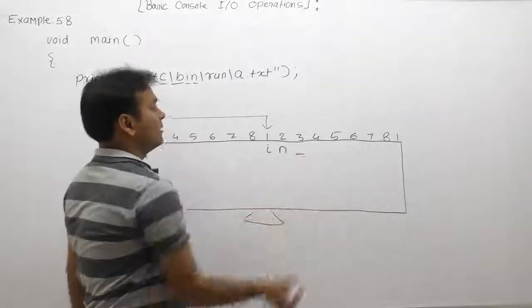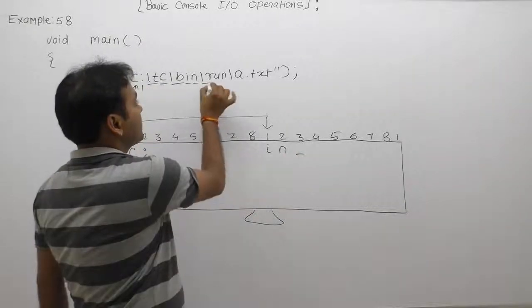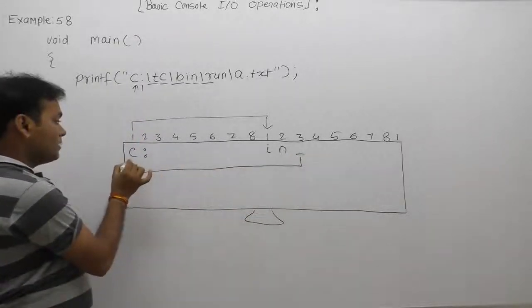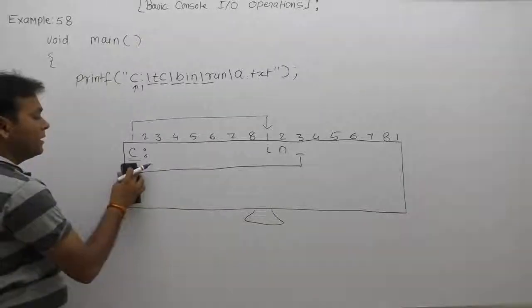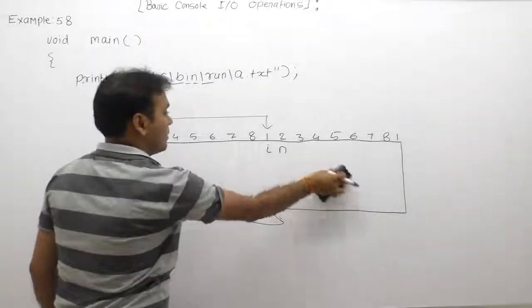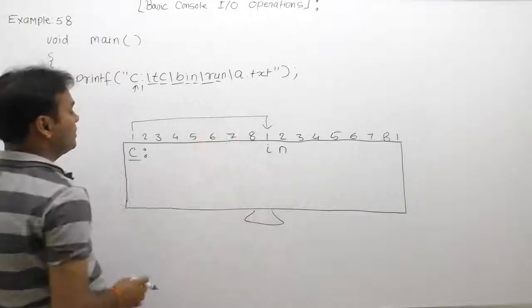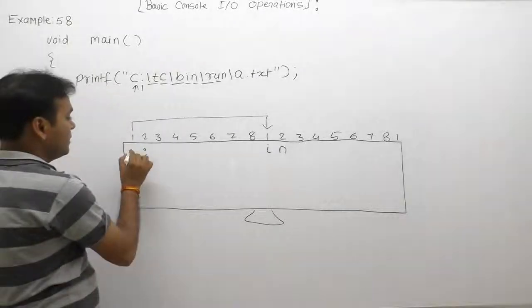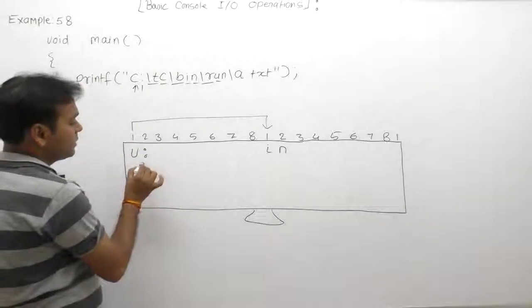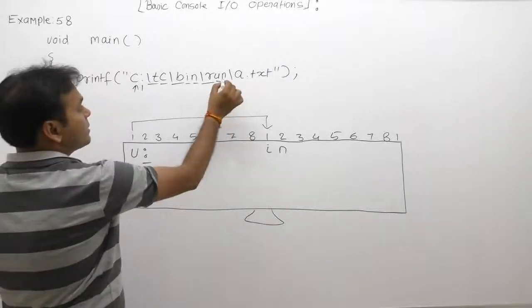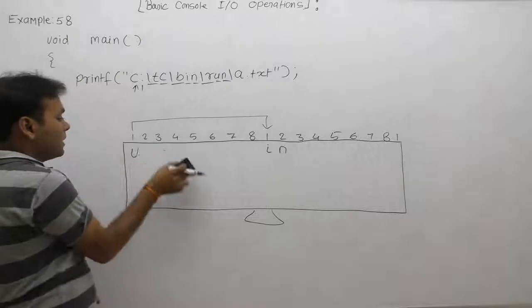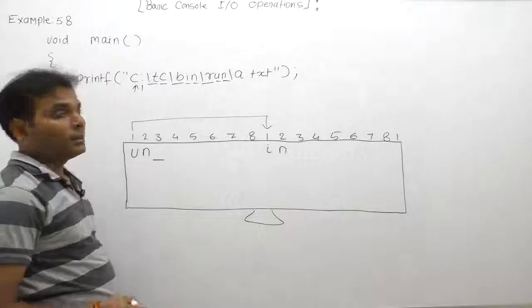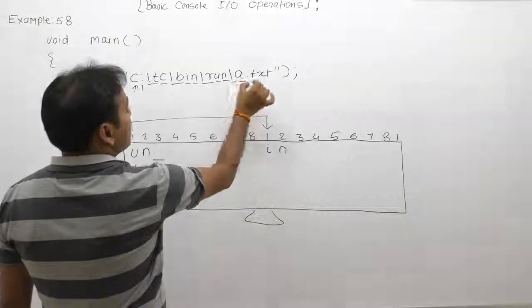Next is 'n', which will be printed at the next location as character 'n', then the cursor moves to the third position. Then again backslash r — as we know, according to backslash r, the cursor will be moved to the first position of the current line. Next, character 'u' is printable; 'u' replaces the character at the current first position, so 'c' is replaced by 'u'. After displaying 'u', the cursor is at the second position. Next, 'n' replaces the colon ':', and the cursor moves to the third position.